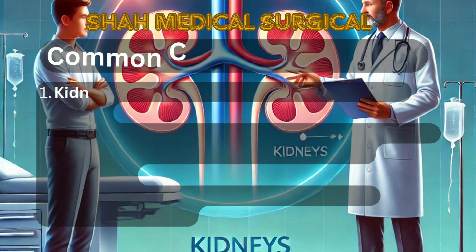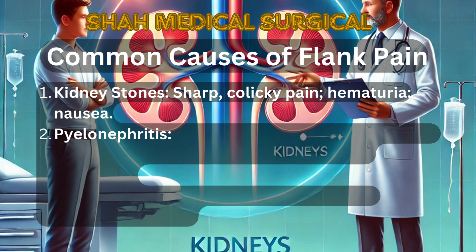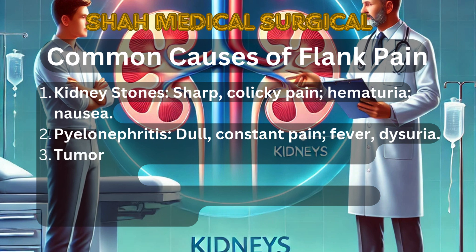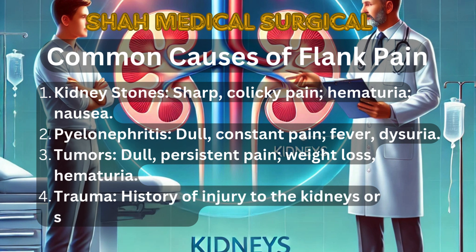Common causes of flank pain. Flank pain may arise from kidney stones, which cause sharp, colicky pain often with hematuria and nausea. Pyelonephritis presents as dull, constant pain accompanied by fever and dysuria. Tumors typically cause dull, persistent pain, sometimes with weight loss or hematuria. Trauma presents as pain linked to a history of injury to the kidneys or surrounding areas.